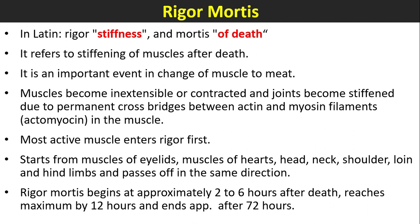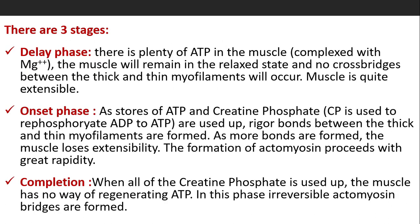The most active muscle endures rigor first. Rigor starts from the muscles of the eyelids, then muscles of the heart, head, neck, shoulder, loin, and hind limbs, and passes off in the same direction. Rigor mortis begins at approximately two to six hours after death, reaches maximum by 12 hours, and ends after 72 hours.